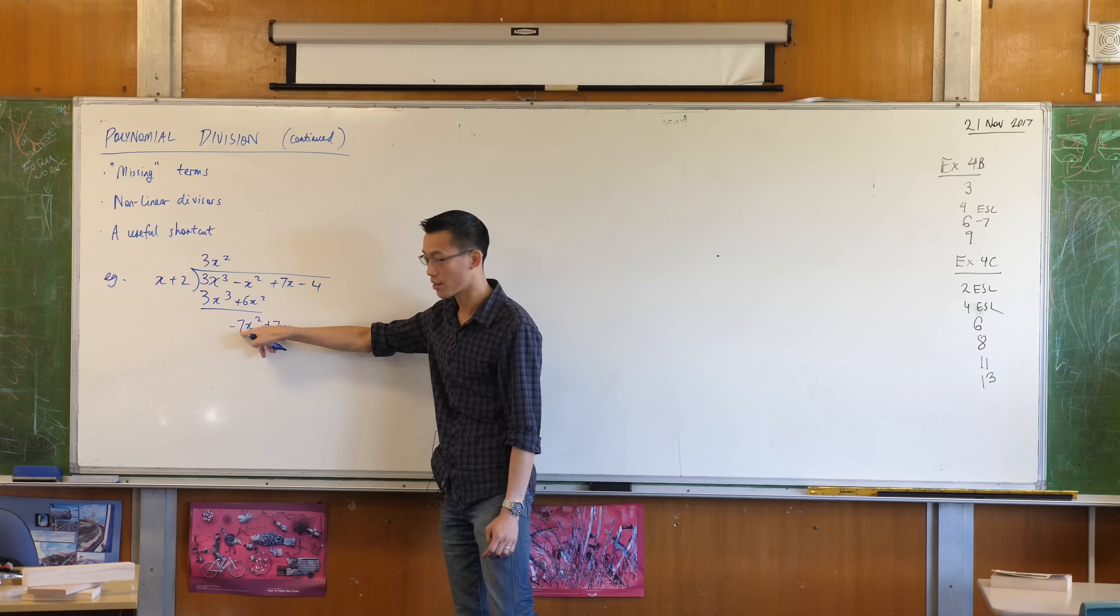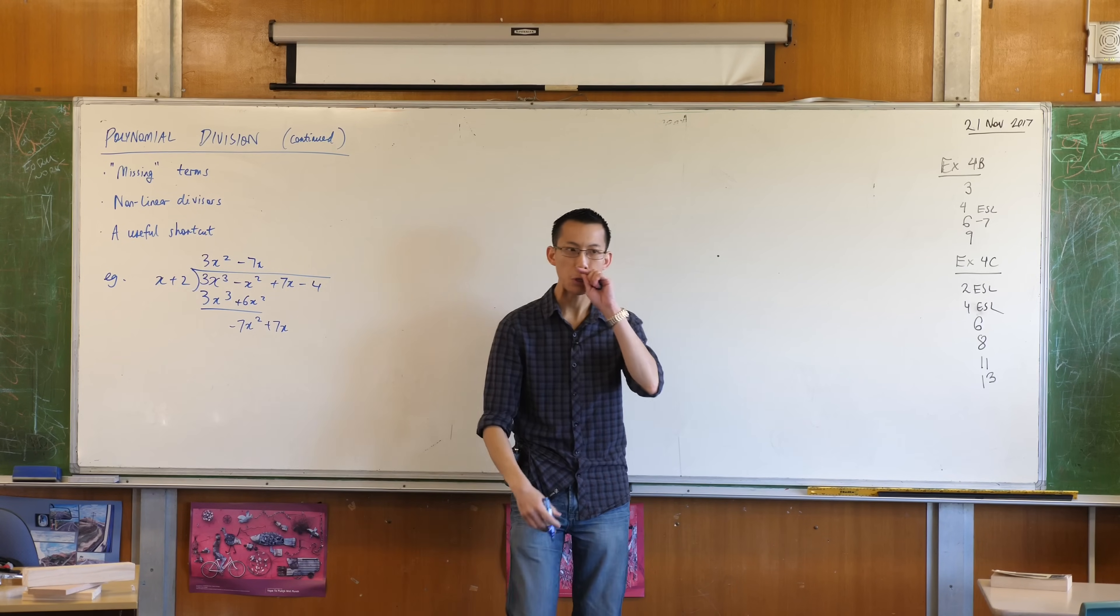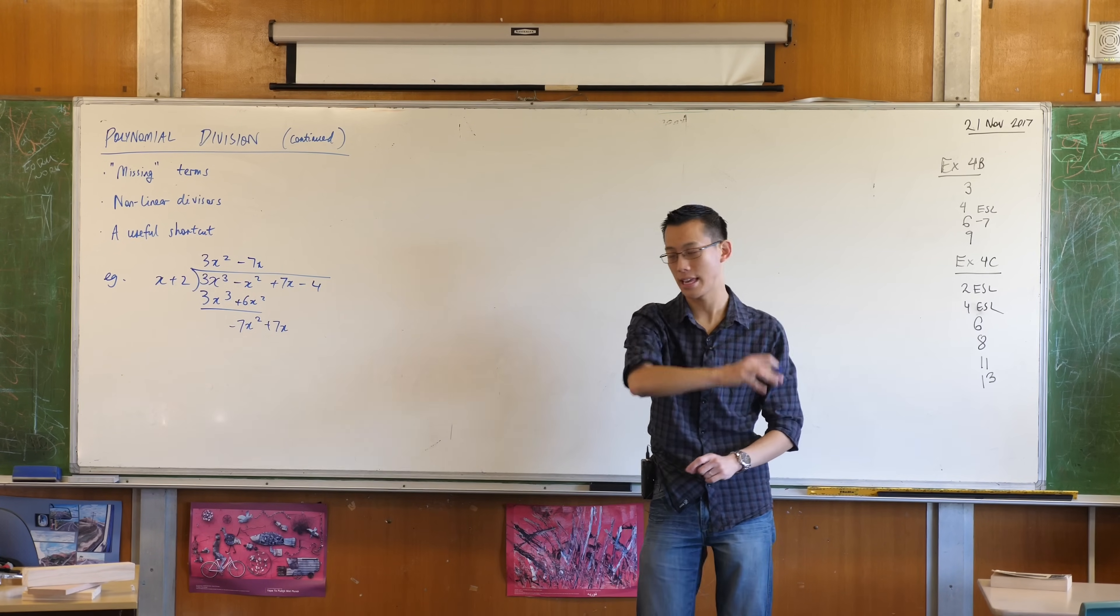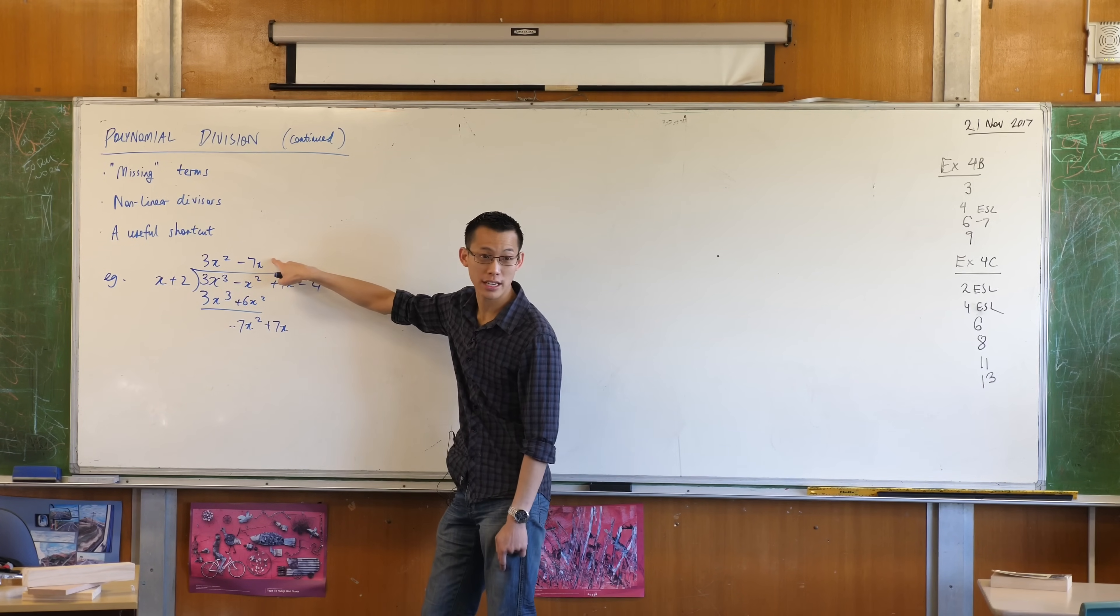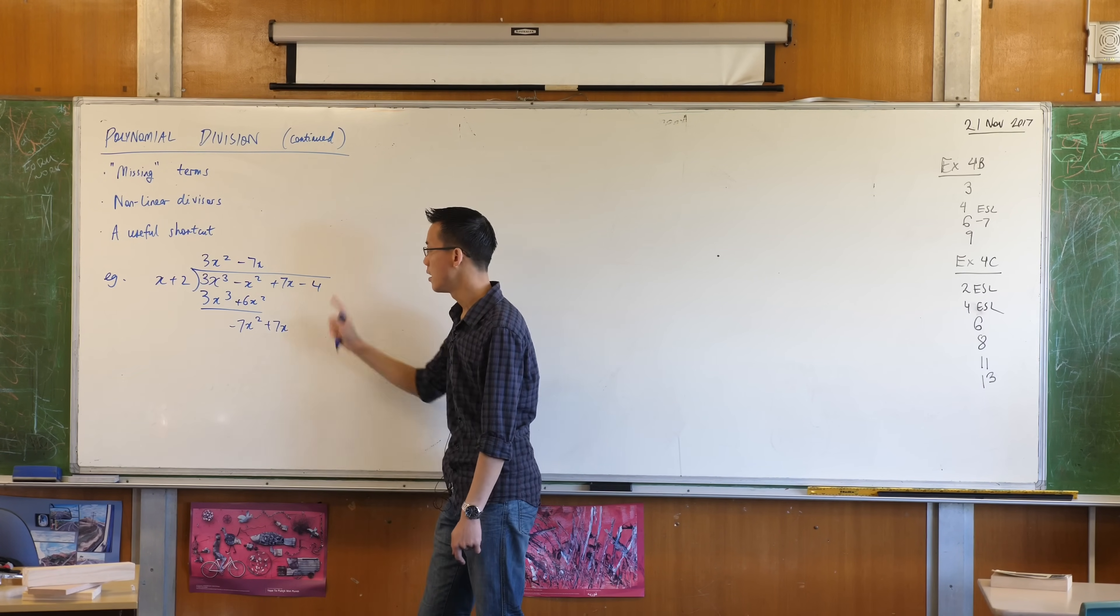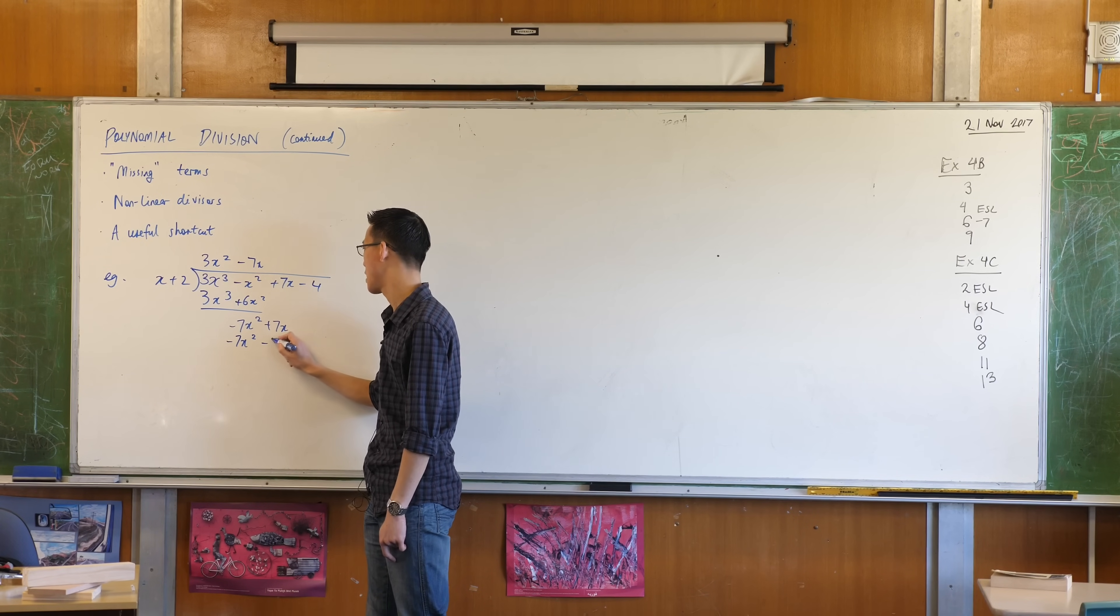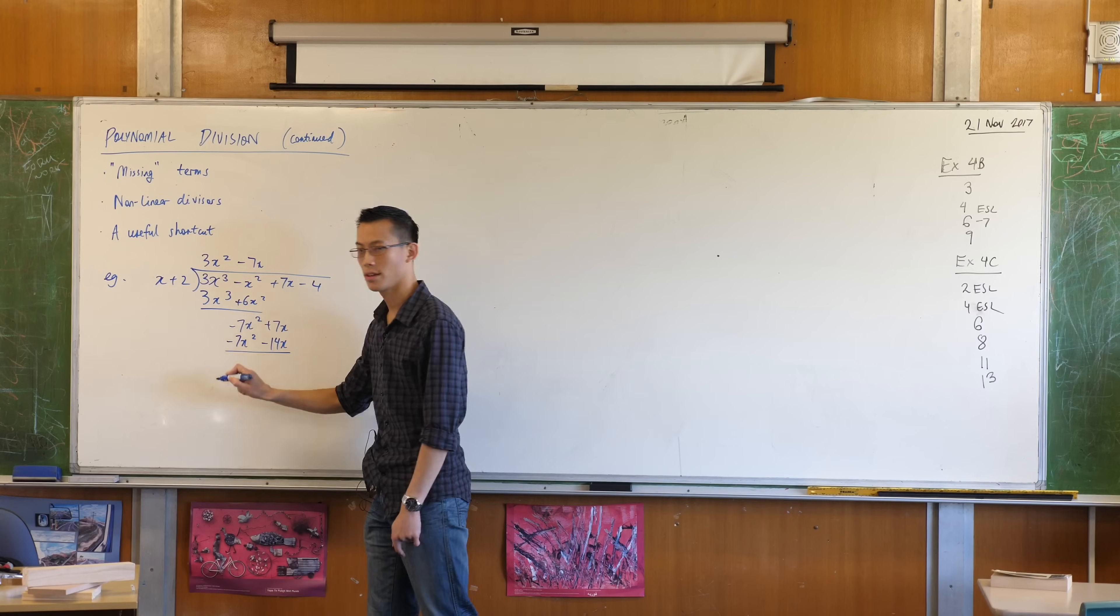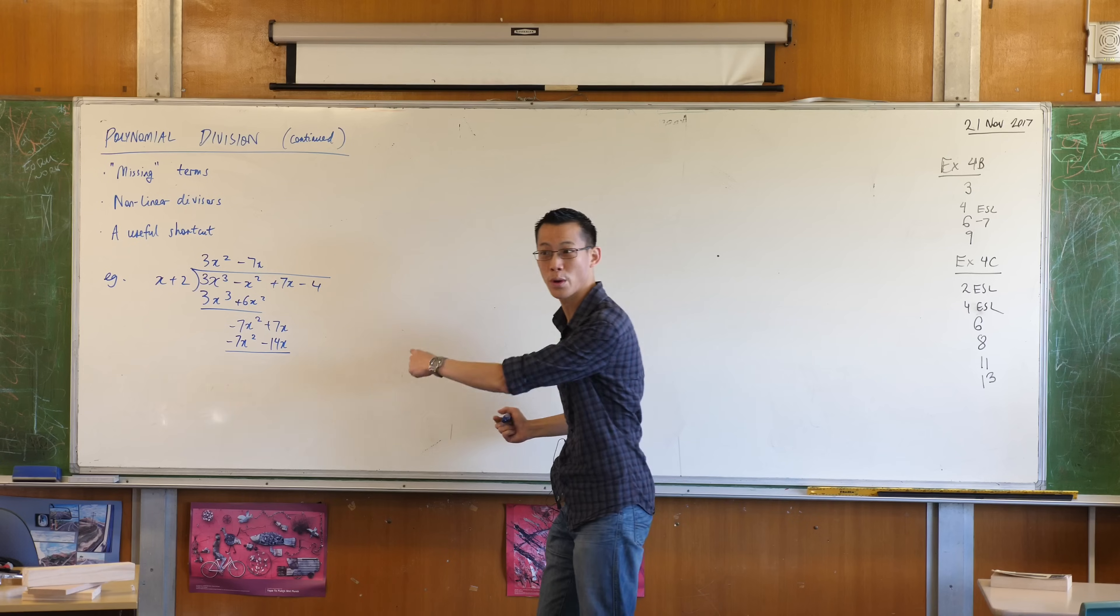How many x's will fit into this thing? Minus 7x, right? Just like in place value, you count down like thousands, hundreds, tens. Here, you're counting down powers of x, so you know you're going to have to get to a power of 1. I will dutifully multiply back, so I get minus 7x squared minus 14x. I'm now subtracting again, so watch out for the double negative. What will you end up with?